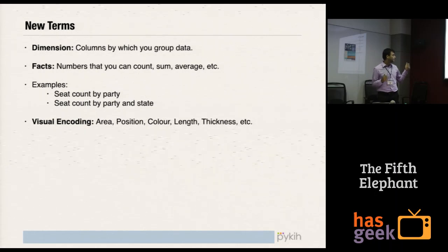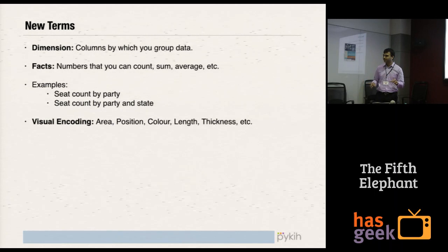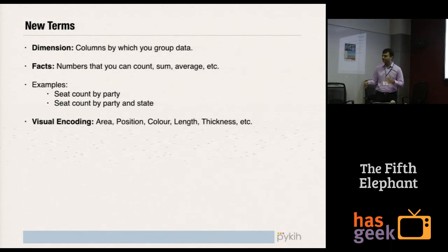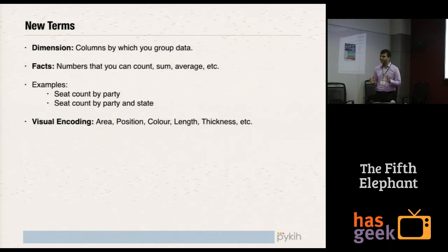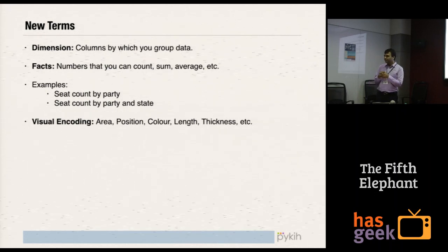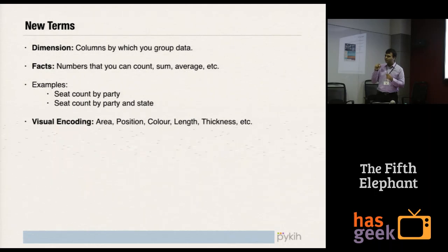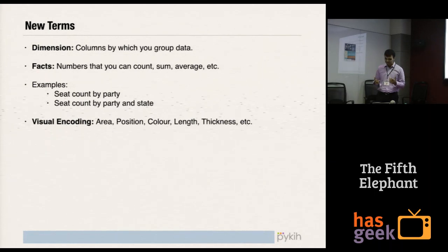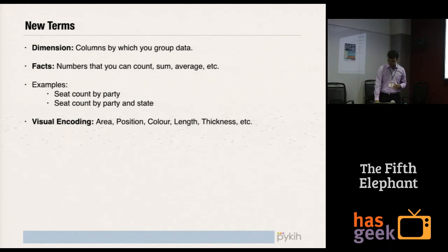Now let's look at various visual encodings. The idea of data visualization is that you take data and visually represent it using various visual encodings that your eyes can understand. These include area, position, color, length, and thickness. So let's go back to our pie chart.